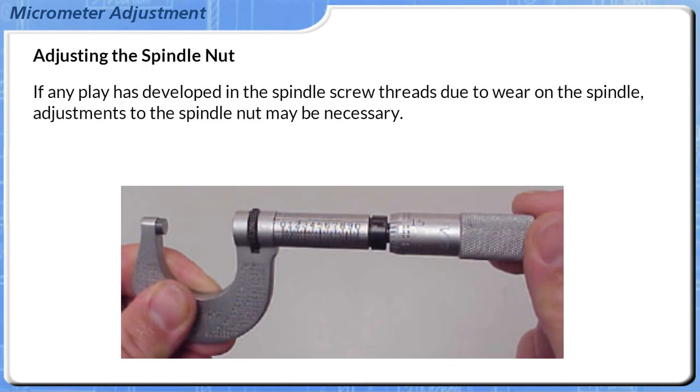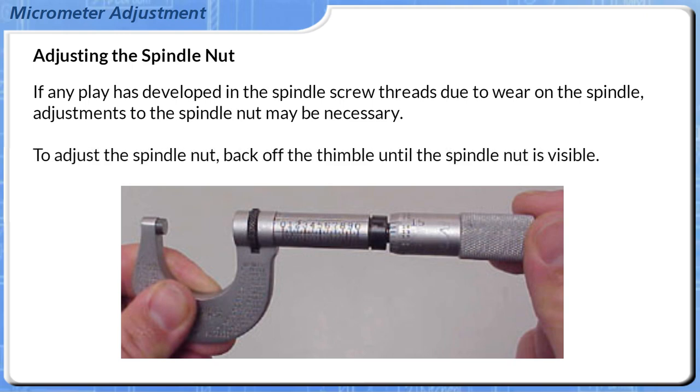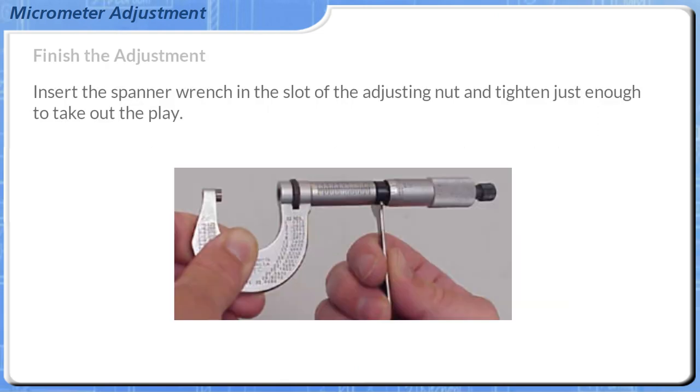If any play has developed in the spindle screw threads due to wear on the spindle, adjustments to the spindle nut may be necessary. To adjust the spindle nut, back off the thimble until the spindle nut is visible. Insert the spanner wrench in the slot of the adjusting nut and tighten just enough to take out the play.